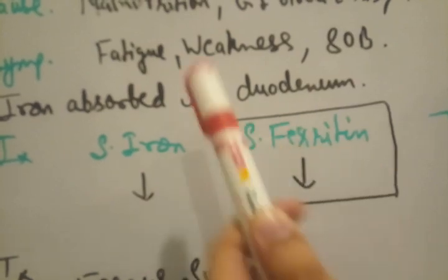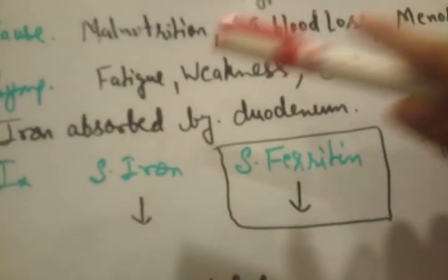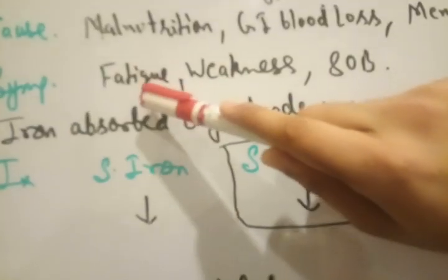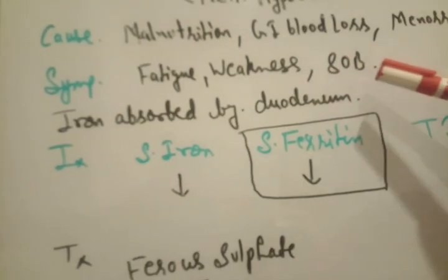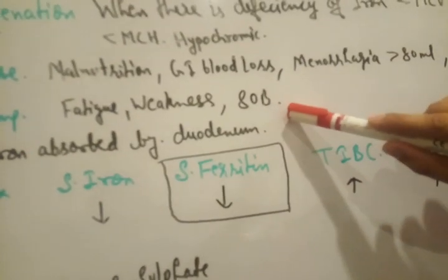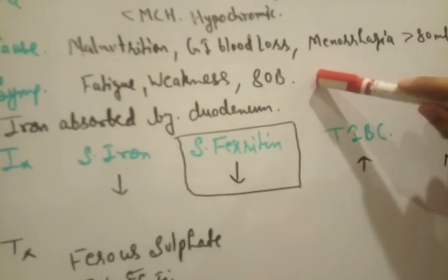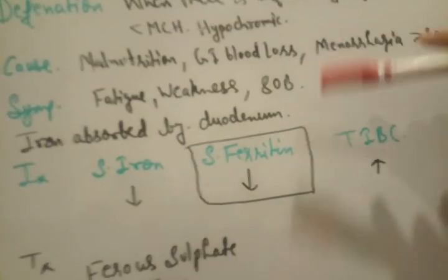Symptoms of every anemia, not only iron deficiency, include fatigue, weakness, tired, lethargic, SOB, shortness of breath, dyspnea, pale tongue, pale eyes, we can see easily.